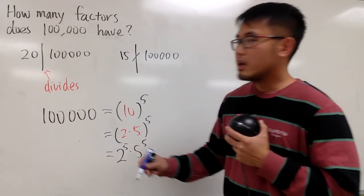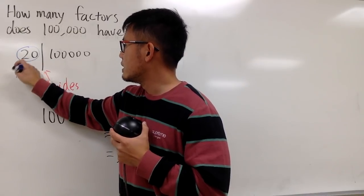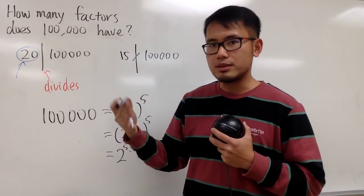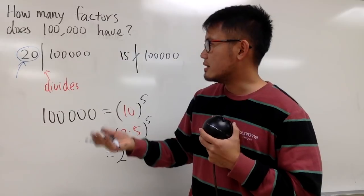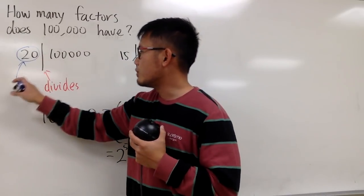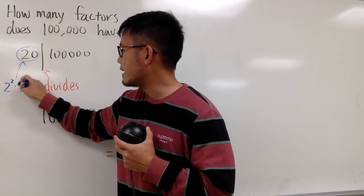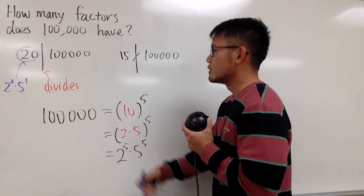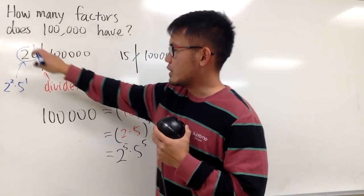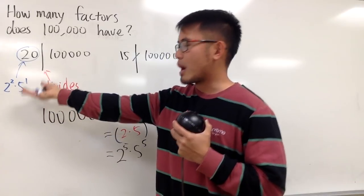Let's break down 20. Well, 20 is the same as 2 times 10, and 10 is the same as 2 times 5. So, I can look at 20 as 2 to the second times 5 to the first. So, you see, 20 divides, and we can just break it down in terms of its prime factorization.